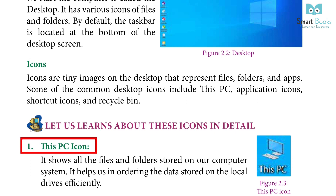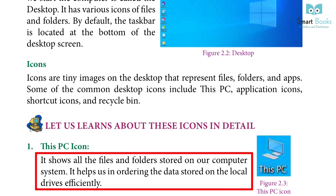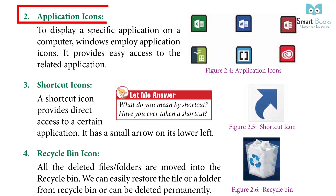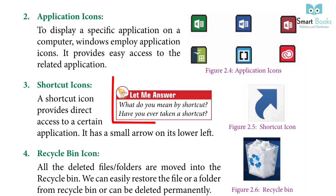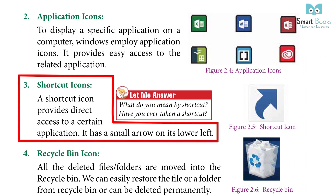1. This PC icon: It shows all the files and folders stored on our computer system. It helps us in ordering the data stored on the local drives efficiently. 2. Application icon: To display a specific application on a computer, Windows employs application icons. It provides easy access to the related application. 3. Shortcut icon: A shortcut icon provides direct access to a certain application. It has a small arrow on its lower left.